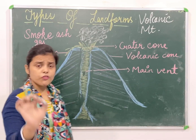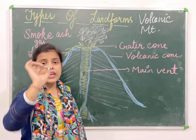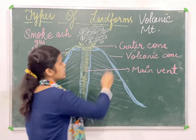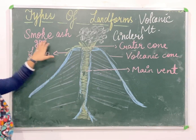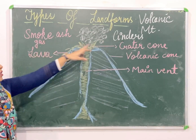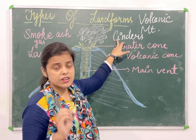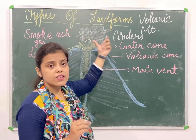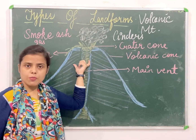The vent is the place from where magma, smoke, ash, and dust particles come out. Together, these are termed as cinders — C-I-N-D-E-R-S. So smoke, ash, gases, and magma are all together termed as cinders. This is the vent through which magma comes out.